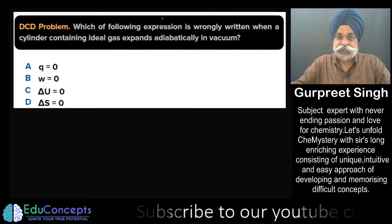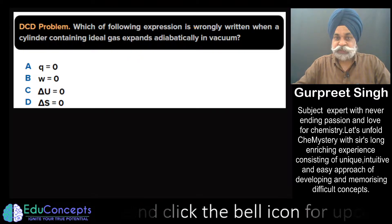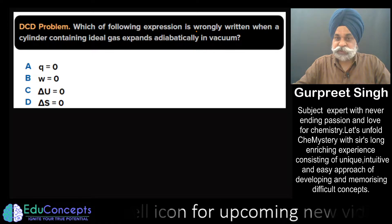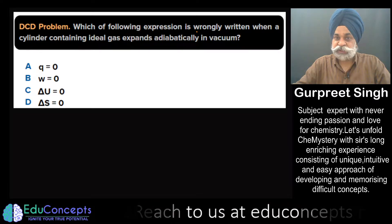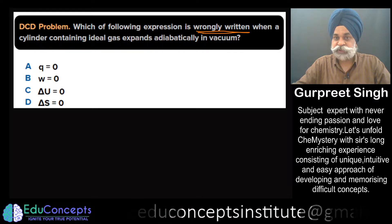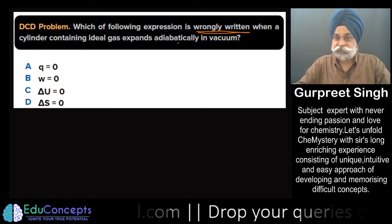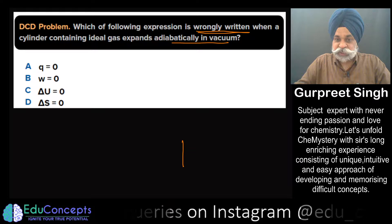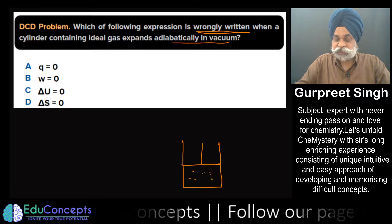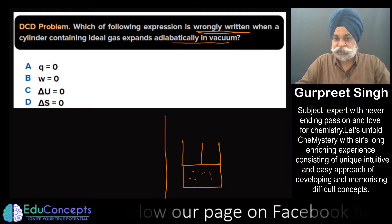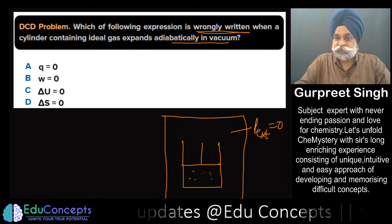I hope you have tried this question by pausing the video. Now, what exactly is being asked? You have to be very vigilant while seeing the options and the wording of the statement — which of the following expressions is wrongly written. First point: when a cylinder containing ideal gas expands adiabatically in vacuum, the gas is going to expand adiabatically.